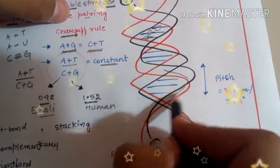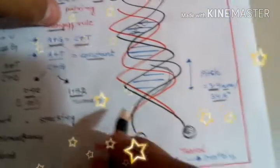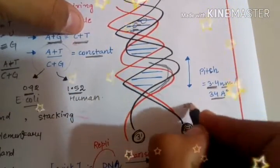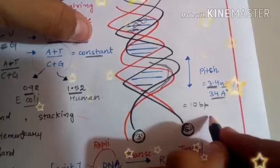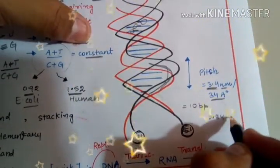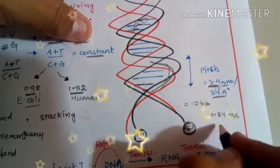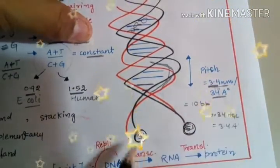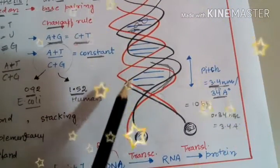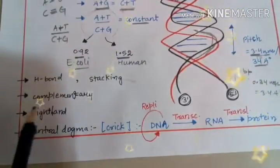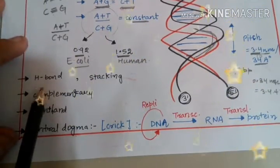The pitch, that is one turn of this DNA, is equal to 3.4 nanometer or 34 angstrom. And since one turn contains 10 base pairs, so the distance between a single base pair will be 0.34 nanometer, that is 3.4 nanometer divided by 10 or 3.4 angstrom. So this is the structure of DNA which has different properties such as hydrogen bonding. There are different hydrogen bonds found between different nitrogenous bases such as A double bond T and C triple bond G.